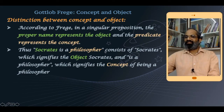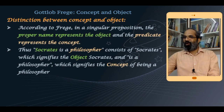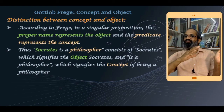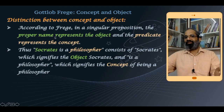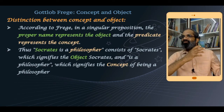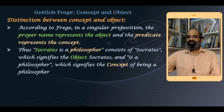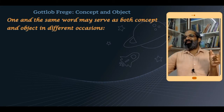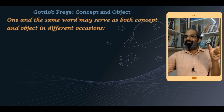In 'Socrates is a philosopher,' the subject 'Socrates' refers to a particular individual — an entity or object — whereas 'is a philosopher' refers to some sort of property. So the proper name represents the object and the predicate represents the concept. Frege adds, however, that one and the same word may serve as both concept and object in different contexts — it is not always so simple.